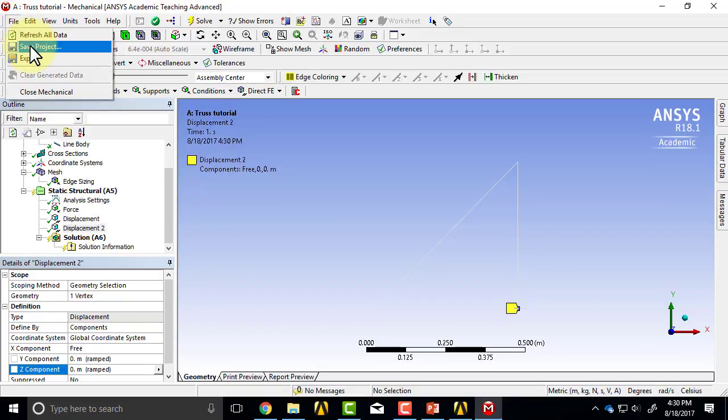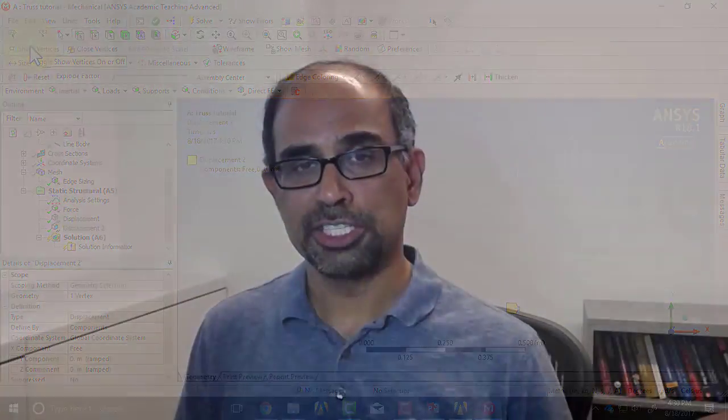At this point, we can ask ANSYS to find the pin displacements that are not known in such a way that the potential energy of the truss is minimized. That's what is coming up next.